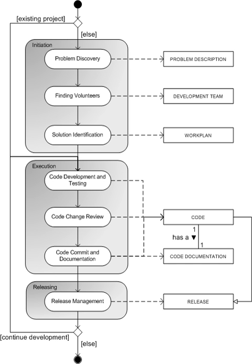The second is the progressive open-source development, which is more like a great babbling bazaar of differing agendas and approaches, out of which a coherent and stable system could seemingly emerge only by a succession of miracles. The latter analogy points to the discussion involved in an open-source development process.